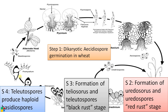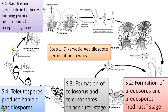Now we have basidiospores of the plus strain and minus strain. These basidiospores cannot infect wheat again — they must travel toward barberry, transferred by wind. Only once they reach barberry can they cause further infection.